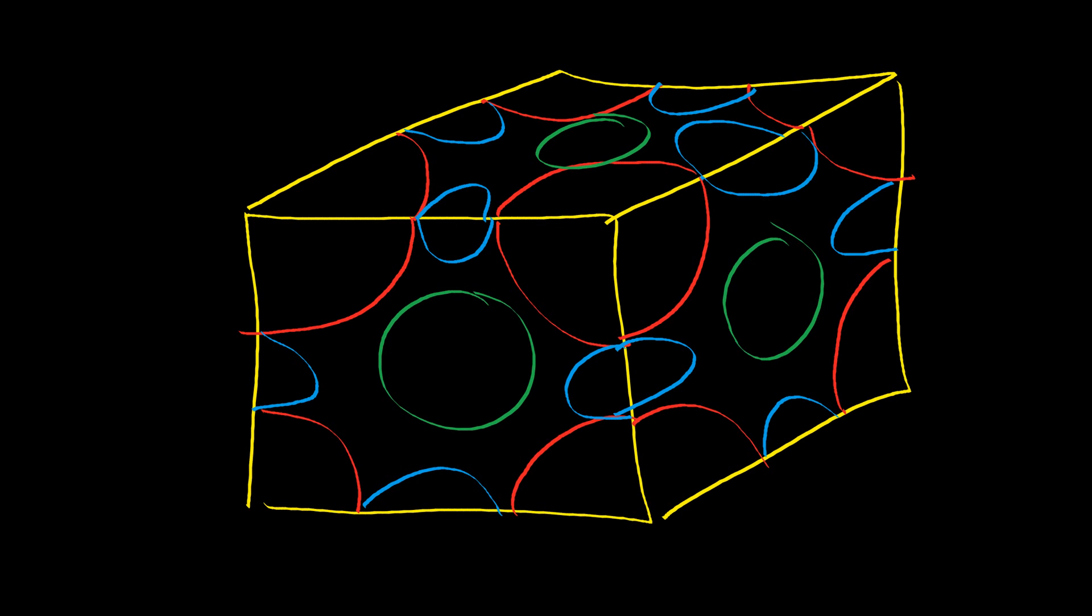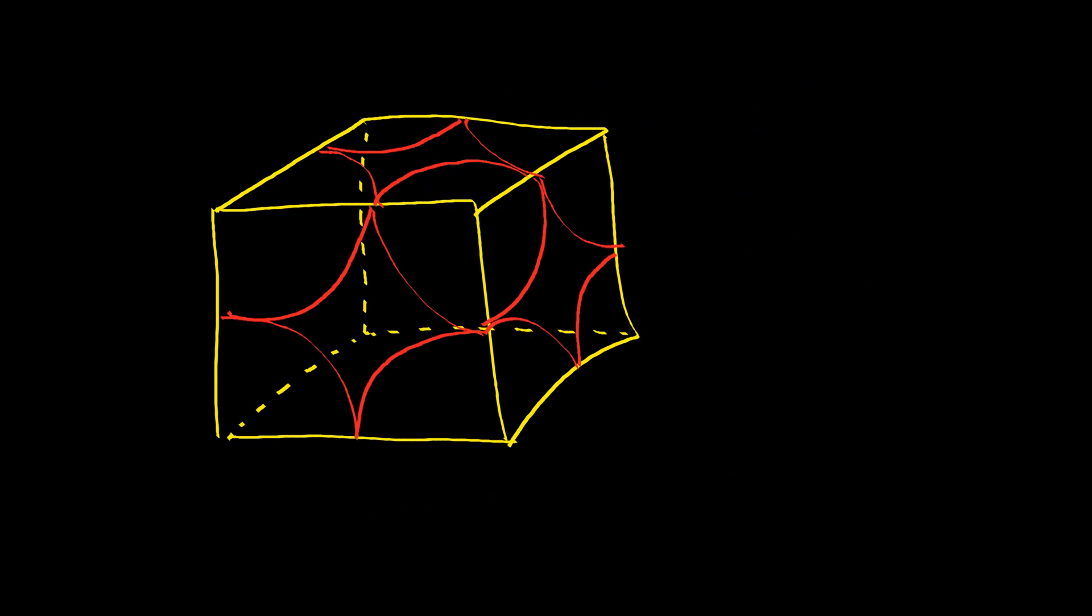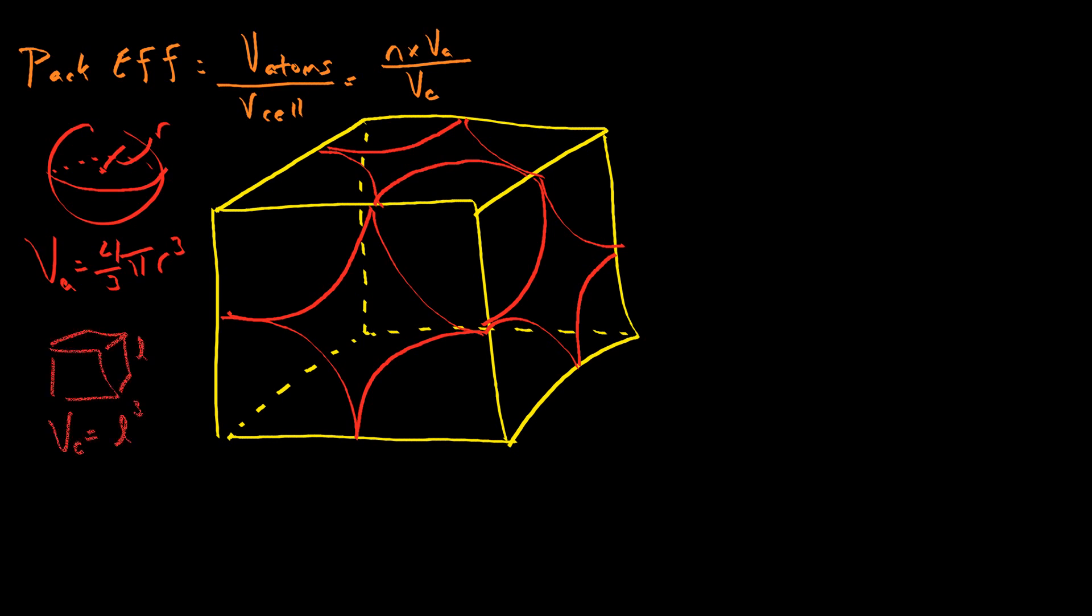Having discussed that, let's go ahead and look at the simple cubic cell. Here we have our simple cubic structure. You can see there is one sphere at each corner, that's it. To find the packing efficiency, you need to divide the volume of all the atoms inside the cube by the total volume of the cube. So you need to find the number of atoms inside the cube multiplied by the volume per atom divided by the total volume of the cell. If each atom is a sphere of radius R, the volume per atom is just 4/3 π R³ - that's just the volume of the sphere. And the volume of the cube, if the cube has an edge length of L, is just L³.